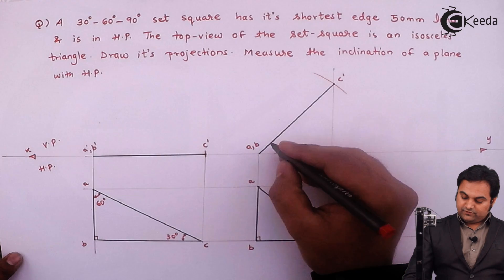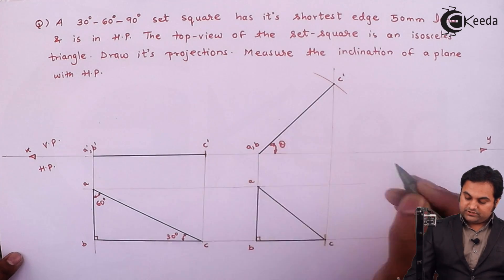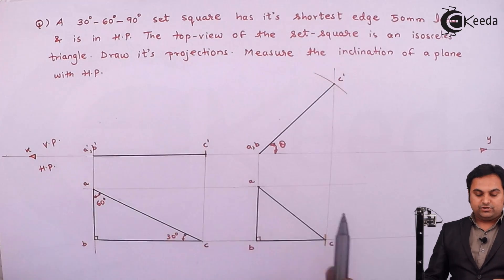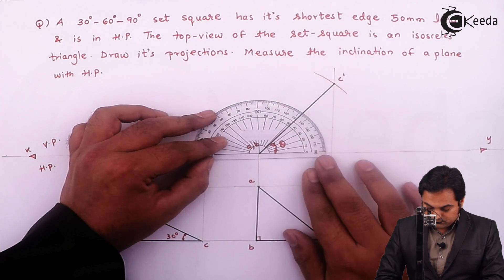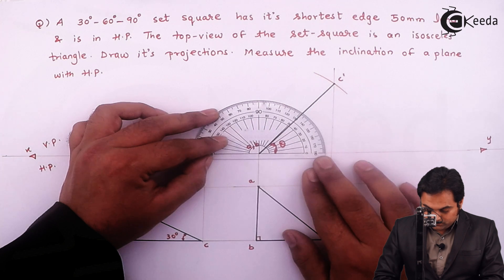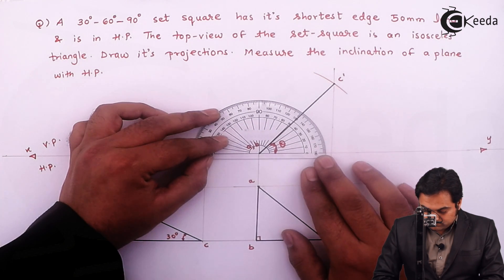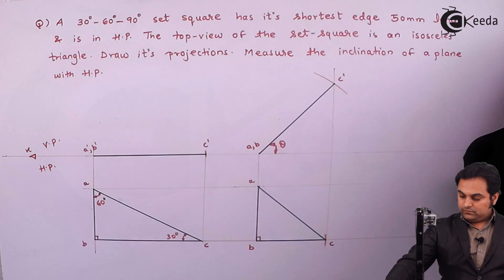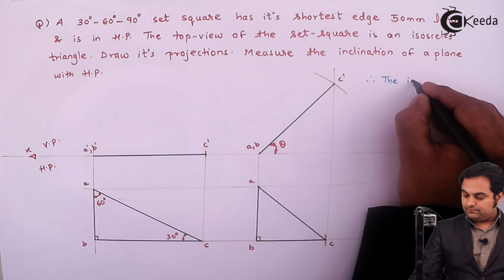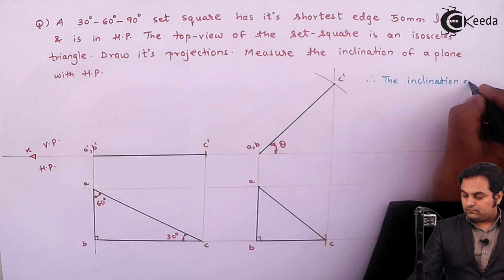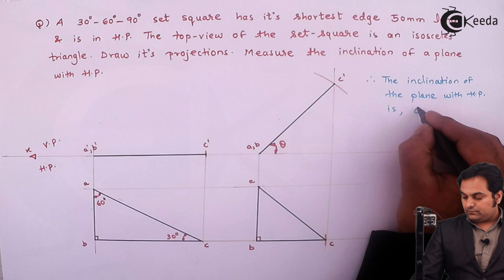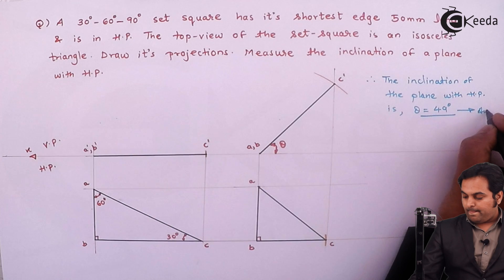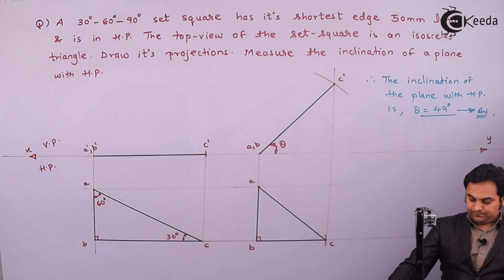This is the inclination of the plane with HP, seen in VP and called theta. It is given to measure the inclination of the plane with HP, so I need to measure that. The measurement gives 49 degrees. Therefore, the inclination of the plane with HP is theta equals 49 degrees — that's the answer.